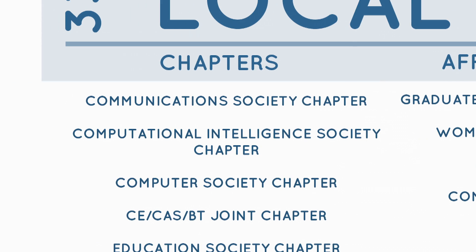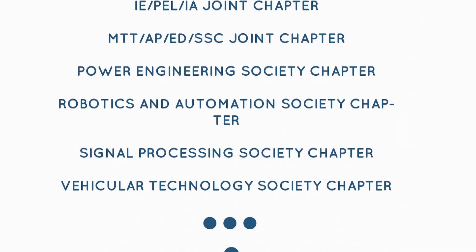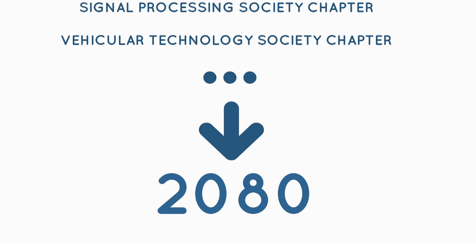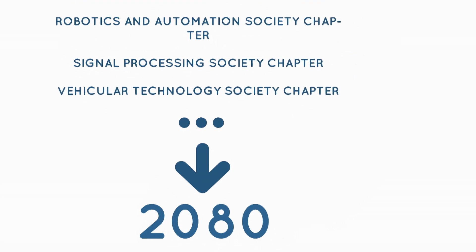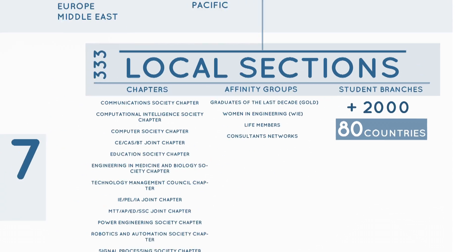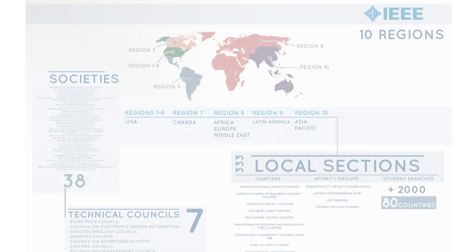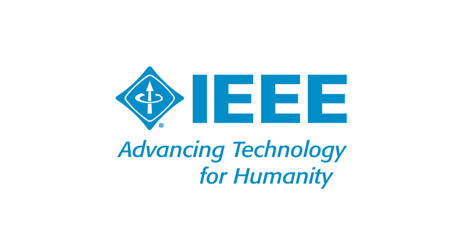Technical units are called chapters, made up with members of one or more society, motivated by a common interest or objective. There are more than 2,080 chapters in operation. Either affinity groups or chapters can be developed within the scope of student branches. IEEE is the world's biggest professional organization, based only on the work of volunteers from all ages and engineering sectors that give their best to contribute to the technological progress for the benefit of mankind.